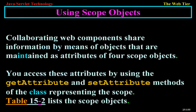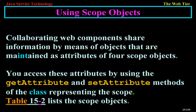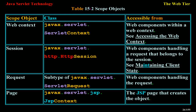Using scope objects: collaborating web components share information by means of objects that are maintained as attributes of four scope objects. You access these attributes by using the getAttribute and setAttribute methods of the class representing the scope. Table 15-2 lists the scope objects: web context (javax.servlet.ServletContext), accessible from web components within a web context. Session (javax.servlet.http.HttpSession), accessible from web components handling a request that belongs to the session.